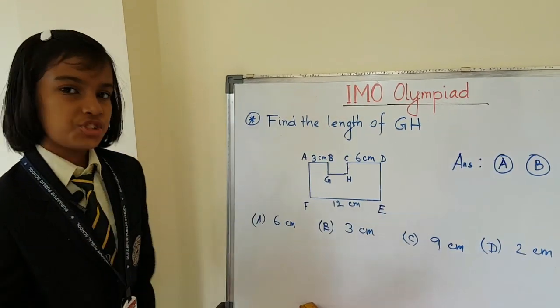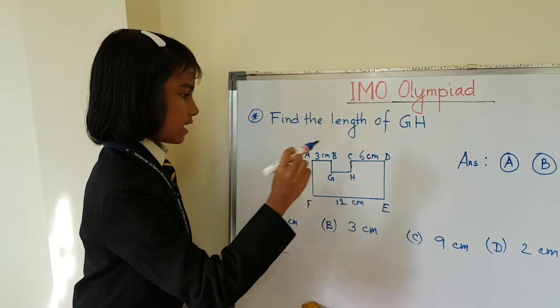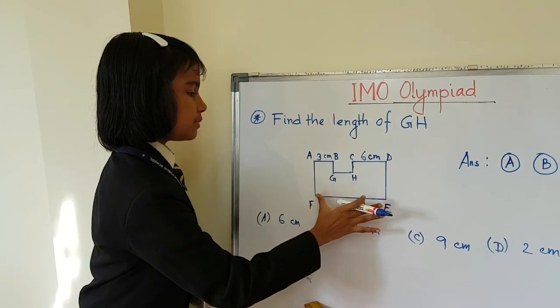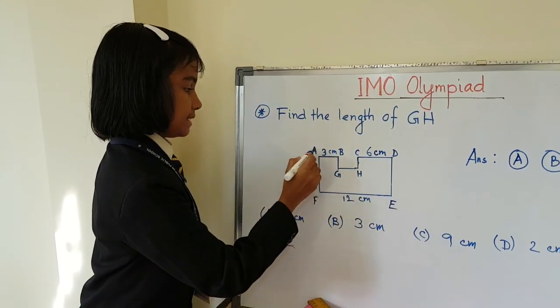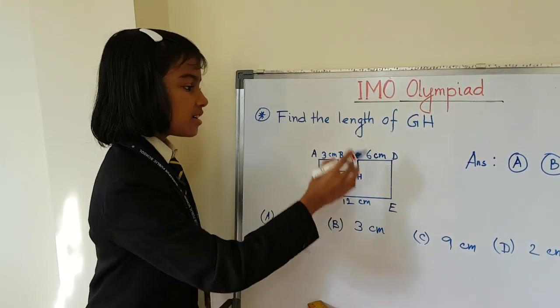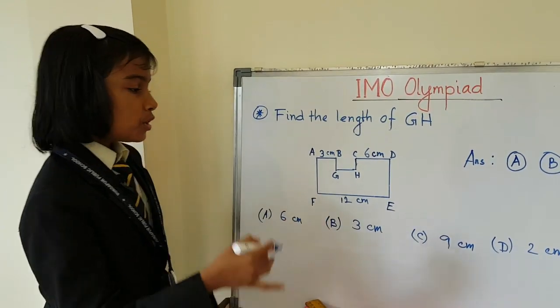Just see if 12 cm means this is also 12 cm. So AB plus GH plus CD is 12 cm, which means EF.